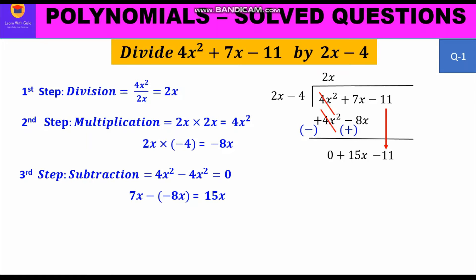We start the first step again — division. 15x divided by 2x gives us 15/2. Alternatively, think of what should be multiplied by 2x to get 15x — that also gives 15/2. Now the second step is multiplication: we multiply 15/2 with 2x − 4, giving us 15x − 30.